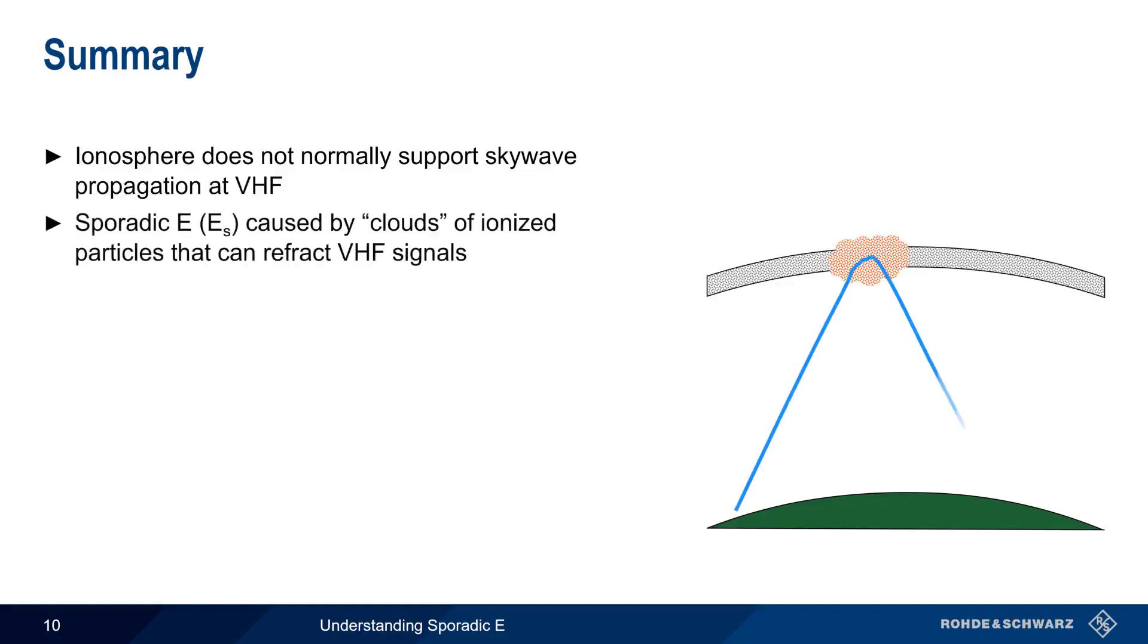Let's end with a brief summary. The ionosphere does not normally support skywave propagation at VHF frequencies in the same way that is commonly seen with lower frequency HF signals. Sporadic E refers to VHF skywave propagation that's enabled by clouds of highly ionized particles in the E layer of the ionosphere.